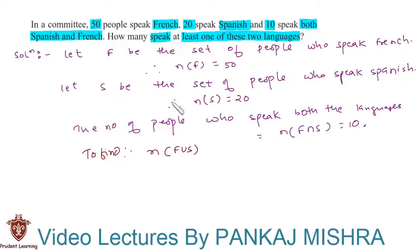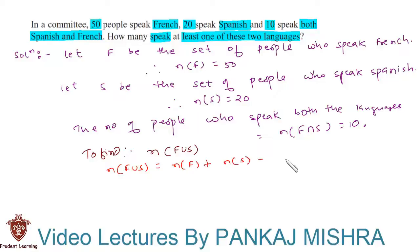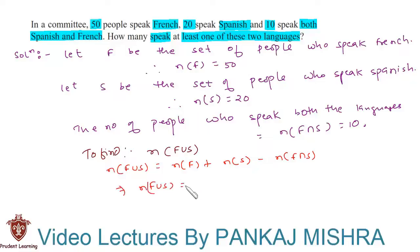F union S is nothing but the number of people who can speak at least one of the two languages. We know that the number of elements in F union S equals the number of elements in F, plus the number of elements in S, minus the number of elements in F intersection S. Plugging in the values: F union S equals 50 plus 20 minus 10.